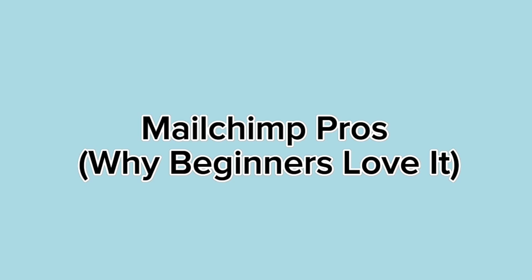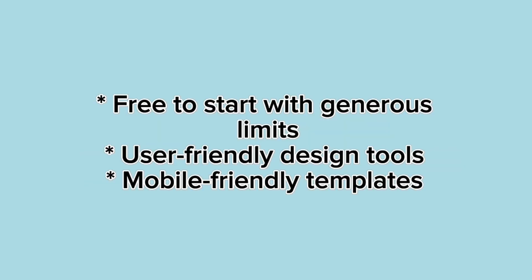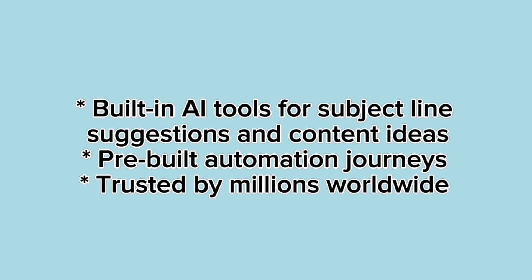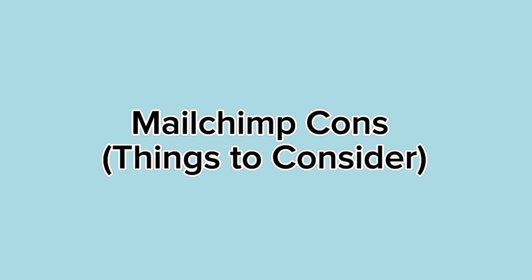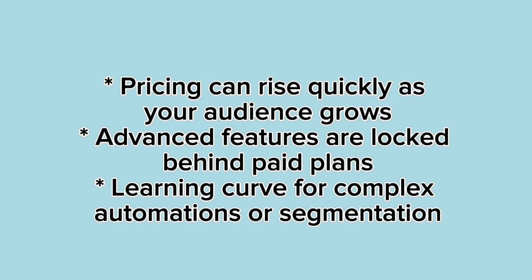Mailchimp pros — why beginners love it: free to start with generous limits, user-friendly design tools, mobile-friendly templates, built-in AI tools for subject line suggestions and content ideas, pre-built automation journeys, and trusted by millions worldwide. Mailchimp cons — things to consider: pricing can rise quickly as your audience grows, advanced features are locked behind paid plans, and there's a learning curve for complex automations or segmentation.